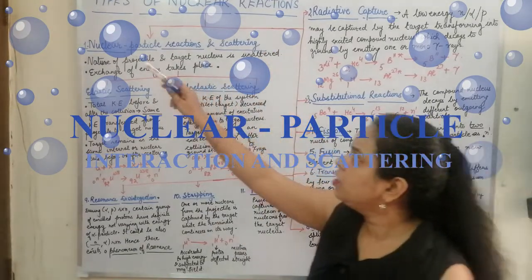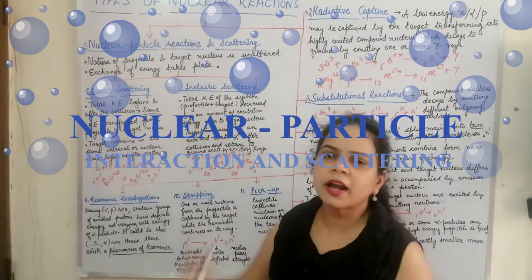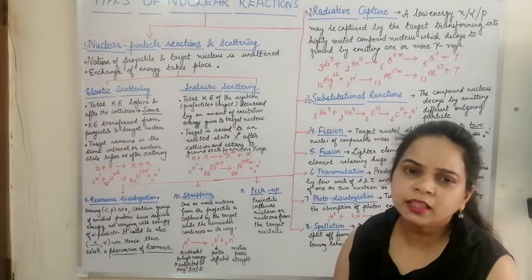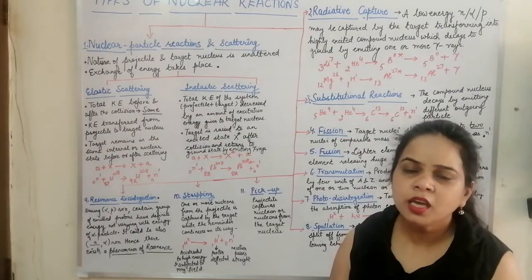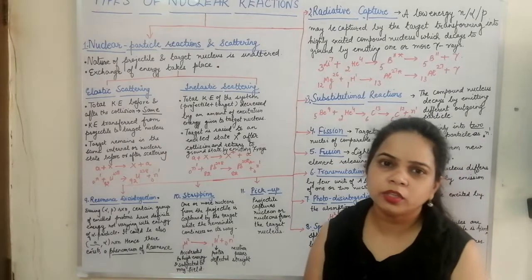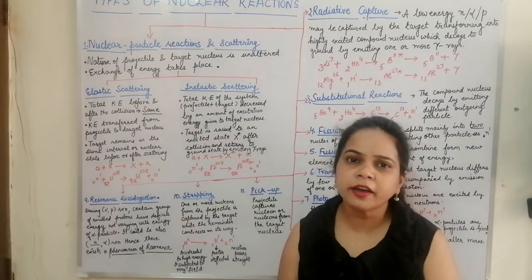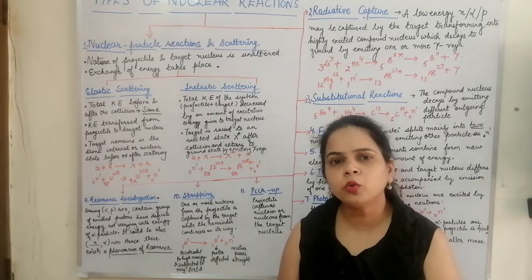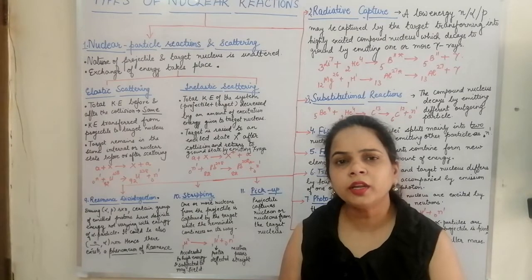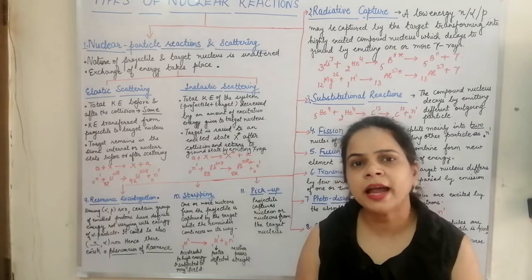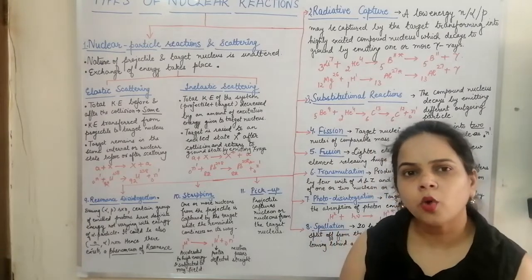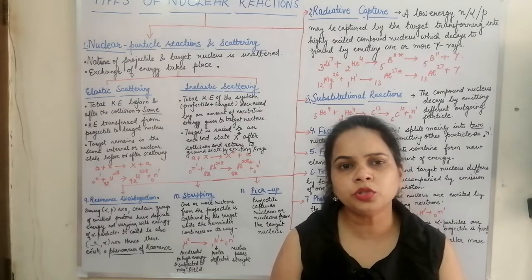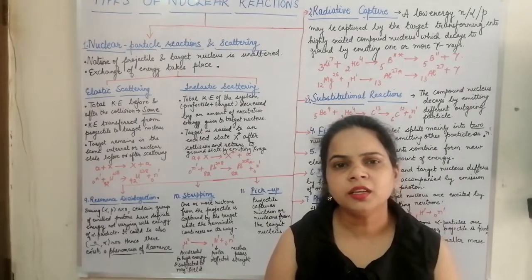The first type is the nuclear particle reaction and the scattering process. In the nuclear scattering process, the nature of the projectile and the target nucleus is not changed upon product formation. The outgoing particle and the product nucleus are the same as the incoming particle and the target nucleus. What changes is the amount of energy — there is just a redistribution of energy in the scattering process.